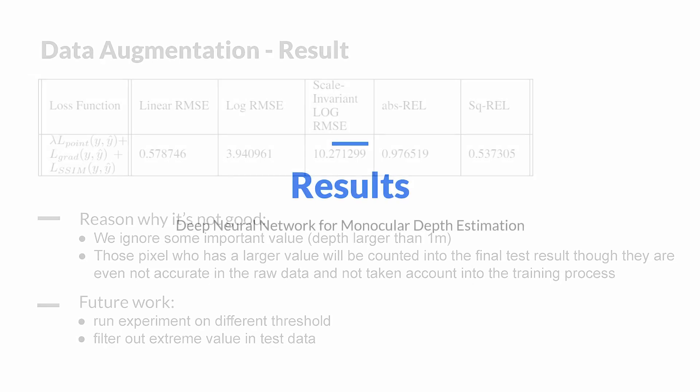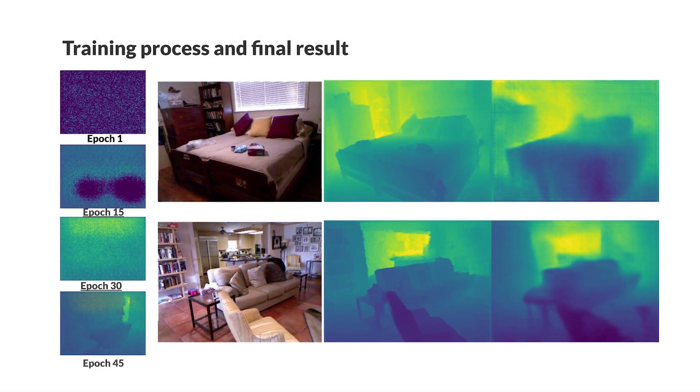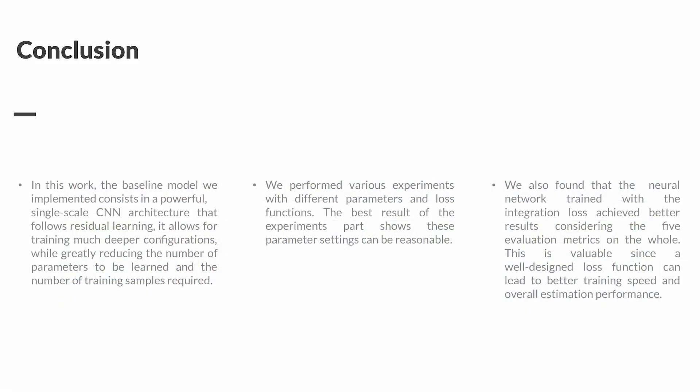Here comes our training process and final result. As you can see, the predictions start from random noise then gradually learn the depth information from the RGB images. Our final result is more vague compared to the ground truth, especially at the edges. We think maybe we can add more edge information in the future to improve the training result.